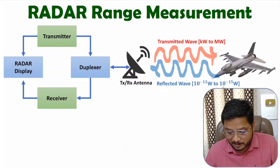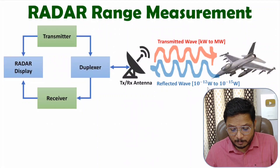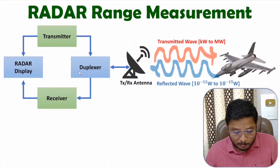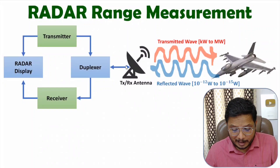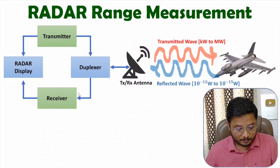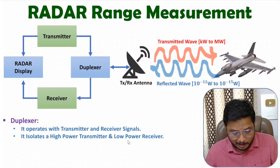The reflected signal that returns to the antenna is a very weak signal, having power in terms of 10^-12 to 10^-15. So the transmitter operates at high power (kilovolts to megavolts) while the receiver operates at very low power (10^-12 to 10^-15 volts). The duplexer forwards the transmitter signal to the antenna, and when the antenna receives the reflected wave, that signal is forwarded to the receiver.